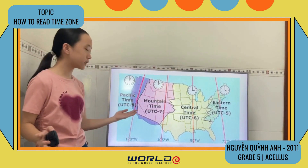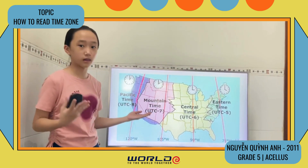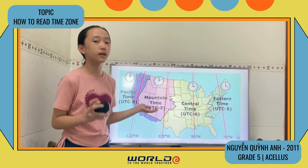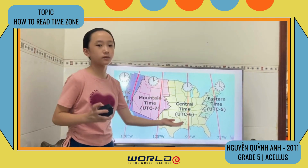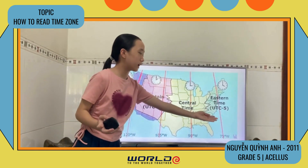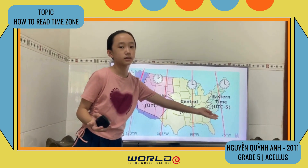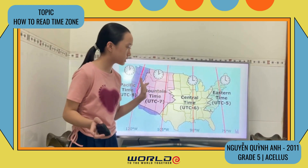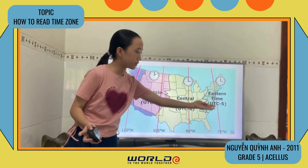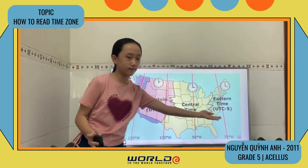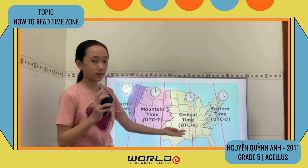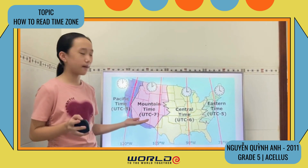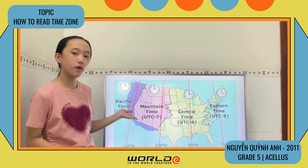If the Pacific timezone is 4 o'clock in the morning, then the Mountain timezone will be 5 o'clock in the morning, Central timezone 6 o'clock, and Eastern timezone will be 7 o'clock. Coming back the other way: Eastern is 7, Central is 6, Mountain is 5, and Pacific is 4 o'clock.